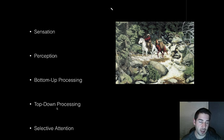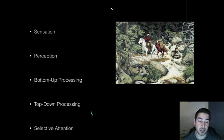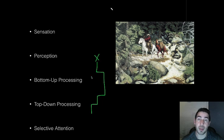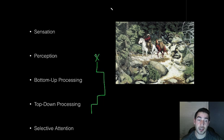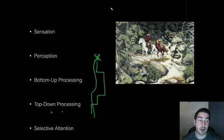Another example of bottom-up versus top-down processing: if you want to drive to the local Walmart and you've never been to the town before, you're going to have to get street-by-street directions and go step by step. But if you live in the town and know Walmart is over here, you can generally start making your way there because you have previous experiences to draw on.